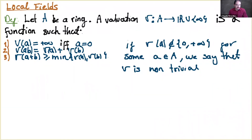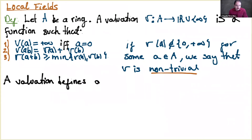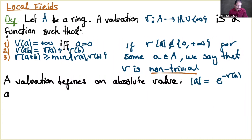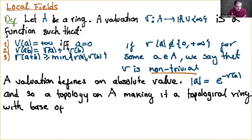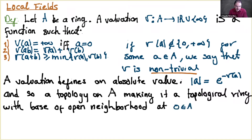The absolute value can be used to endow the ring with a topology — the topology given by the distance constructed from this absolute value. This topology makes the ring a topological ring, meaning the ring operations are continuous. The neighborhoods of zero can be explicitly described: varying over all n, we get a base of neighborhoods of the origin, which in terms of absolute values are just balls around zero. This is exactly what Miriam showed for p-adic numbers.